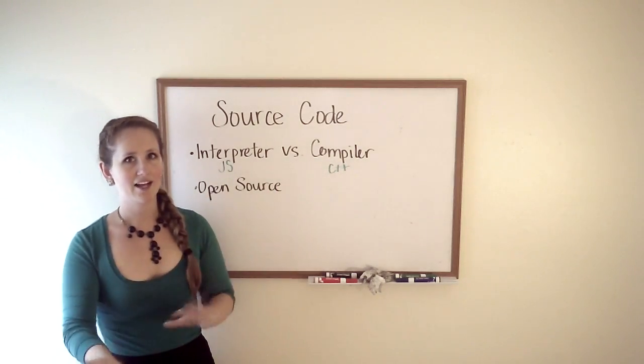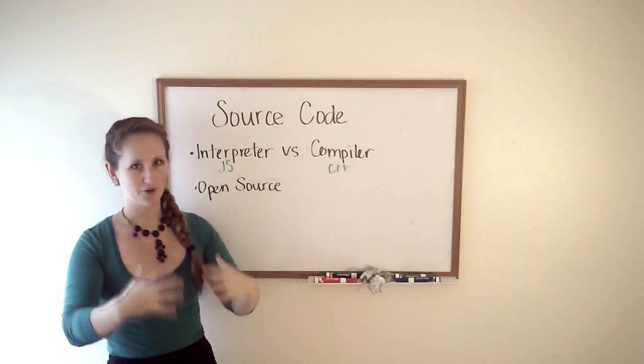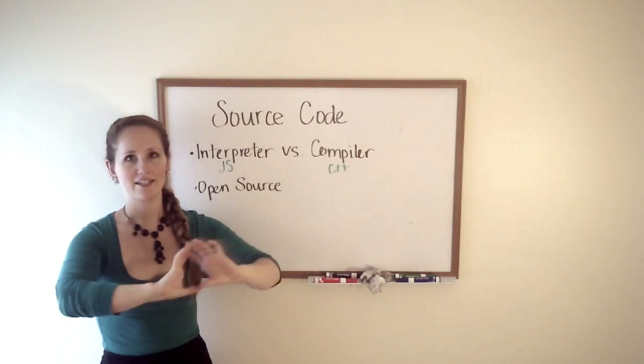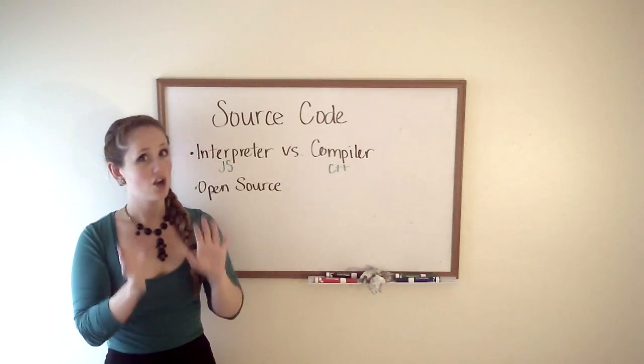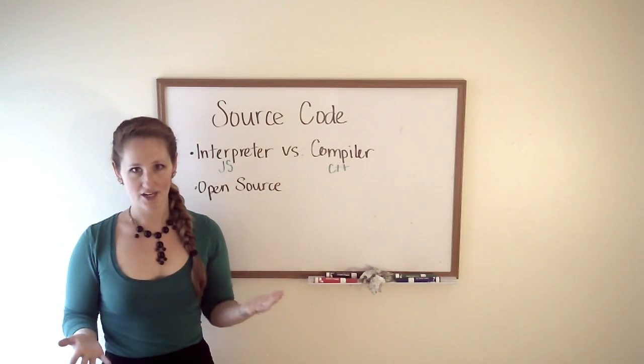Unlike an interpreter, the compiler does all of its work on the programmer's end. So they send out their package, their product, and it's already been compiled. It can already run on a machine.